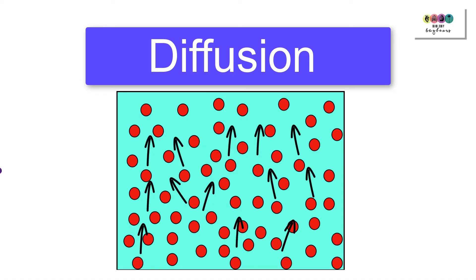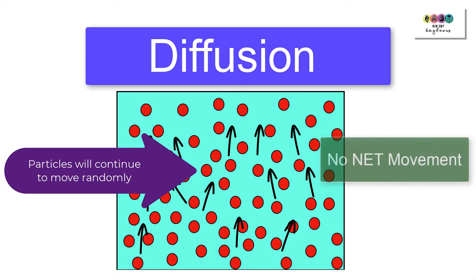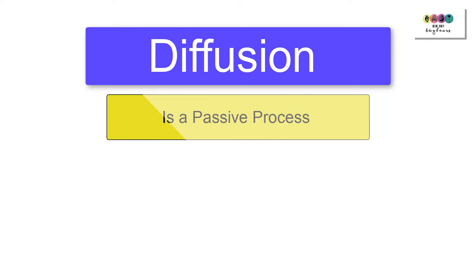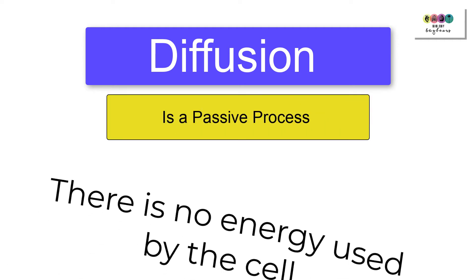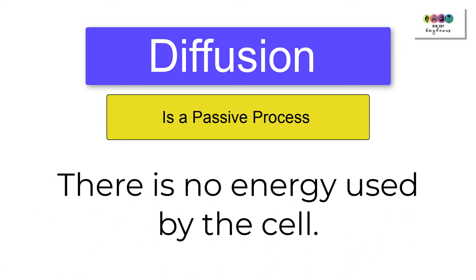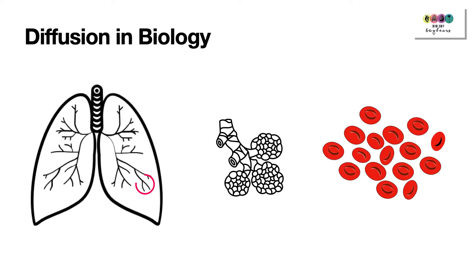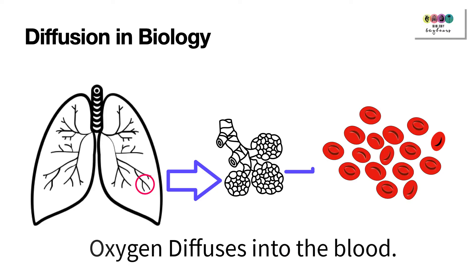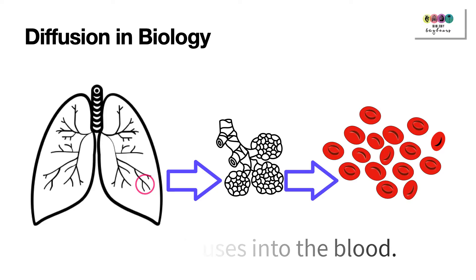Particles continue to move until the concentration is uniform or balanced. After this, they still randomly move about, but there won't be any net movement in one direction or another. The most important thing to remember with diffusion is that it's a passive process — no energy is used by the cell. An example is in the lungs, where oxygen diffuses through the alveoli into the blood, where it's picked up by red blood cells.